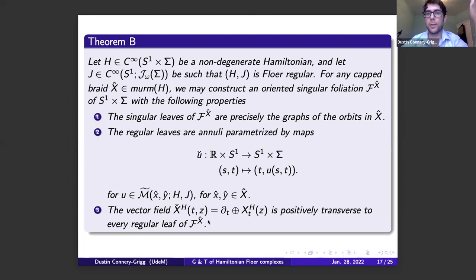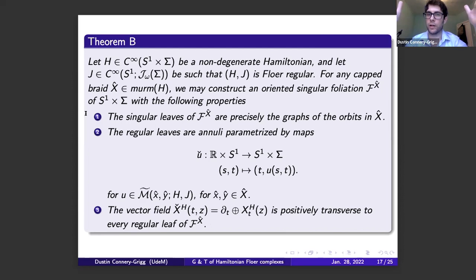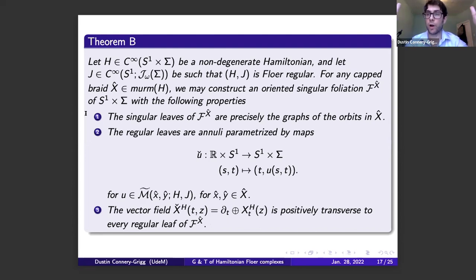For example: if the south pole with trivial capping has index −1 and the orbit z rotating around the equator once with capping β has index 1, then {z_β, S_trivial} is a MERM braid. These objects turn out to be central to developing a geometric picture on surfaces, because we can prove a theorem: given any MERM braid, you can construct an oriented singular foliation of the mapping torus. In contact geometry language this is essentially an open book decomposition; for those familiar with finite energy foliations, this is a projection of an ℝ-invariant finite energy foliation. The singular leaves are exactly the orbits of your MERM braid, and the regular leaves are cylinders parametrized by Floer cylinders running between those orbits.